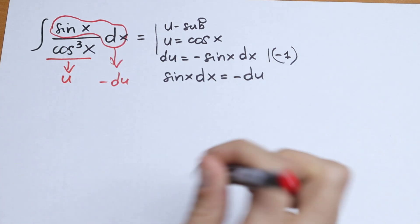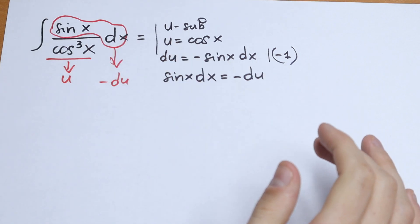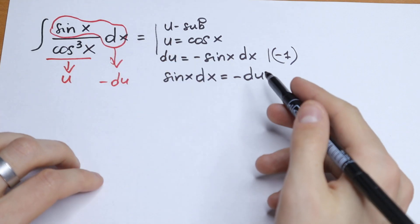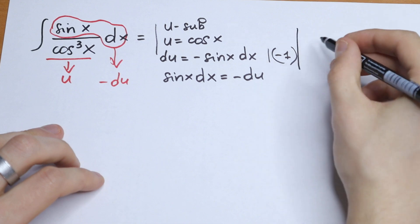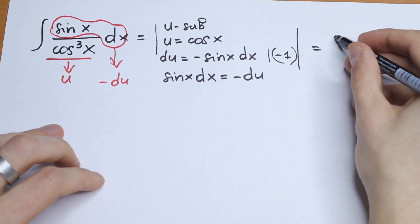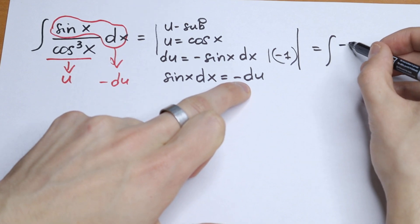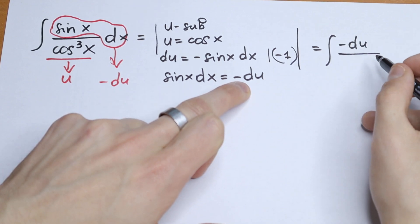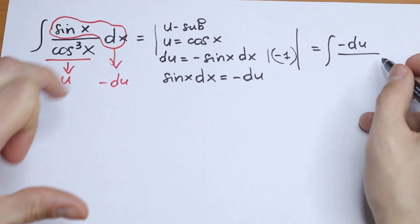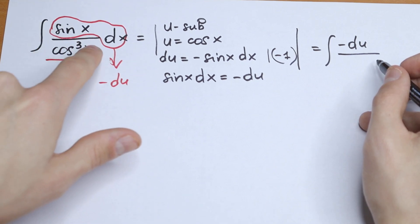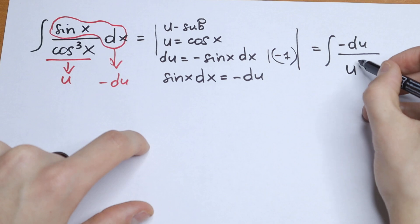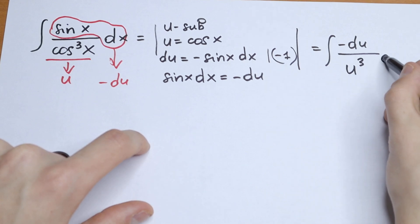So we will have an interesting integral. After all of these changes, we will have an interesting integral. So this will be equal to the integral. Instead of this sine x dx, we will put minus du. And in our denominator, we will have not cos³ x, but u³. Because cosine x is equal to u. u³ du.